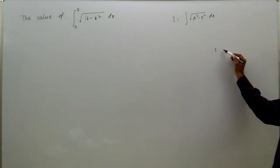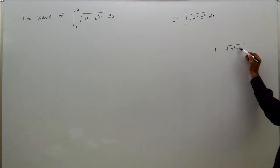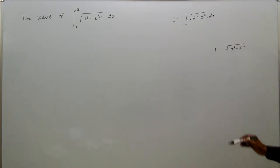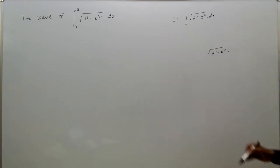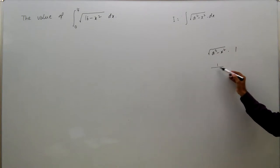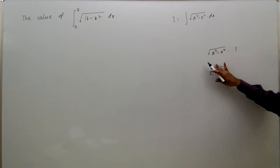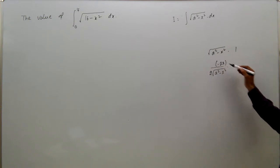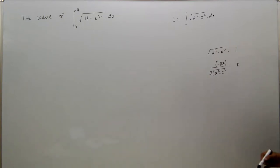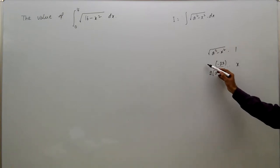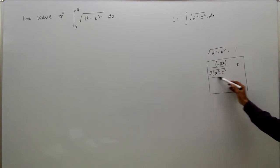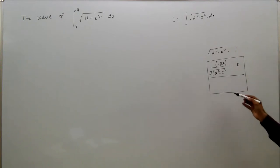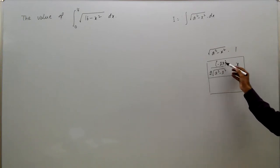We write this as 1 times square root of a squared minus x squared, or as square root of a squared minus x squared into 1. The differentiation of the first term is 1 by 2 root of a squared minus x squared into minus 2x, and the integration of the second term is x.